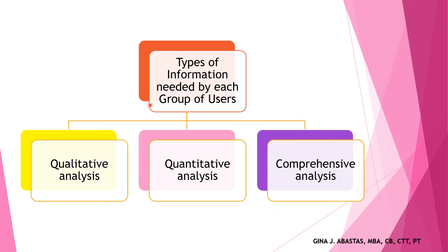The last topic covers the types of information needed by each group of users. Accounting information includes both financial or quantitative and non-financial or qualitative information used by decision-makers. Qualitative analysis means looking at the intangibles. Quantitative analysis means looking at the actual numbers. A comprehensive analysis should include both qualitative and quantitative factors that would impact the decision-makers. That concludes the week one topic.